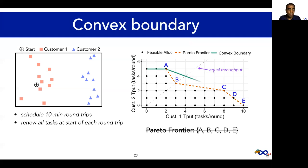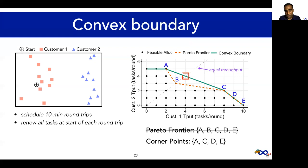The turquoise line shows the convex boundary over the feasible set, defined by the corner points A, C, D, and E. Formally, the convex boundary is the smallest polygon around the feasible set such that no vertex bends inward. Now, instead of schedule B, we'd actually prefer this schedule, since it has higher throughput and is just as fair. Let's call this allocation the target throughput. Notice that it's not feasible in the current round, but I'm going to show you how Mobius can achieve this target throughput at a slightly longer timescale.